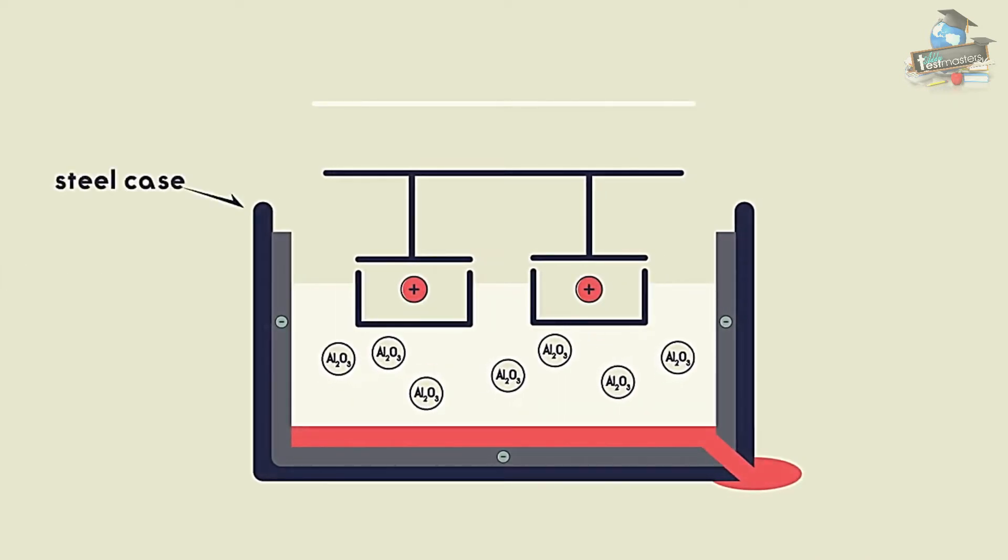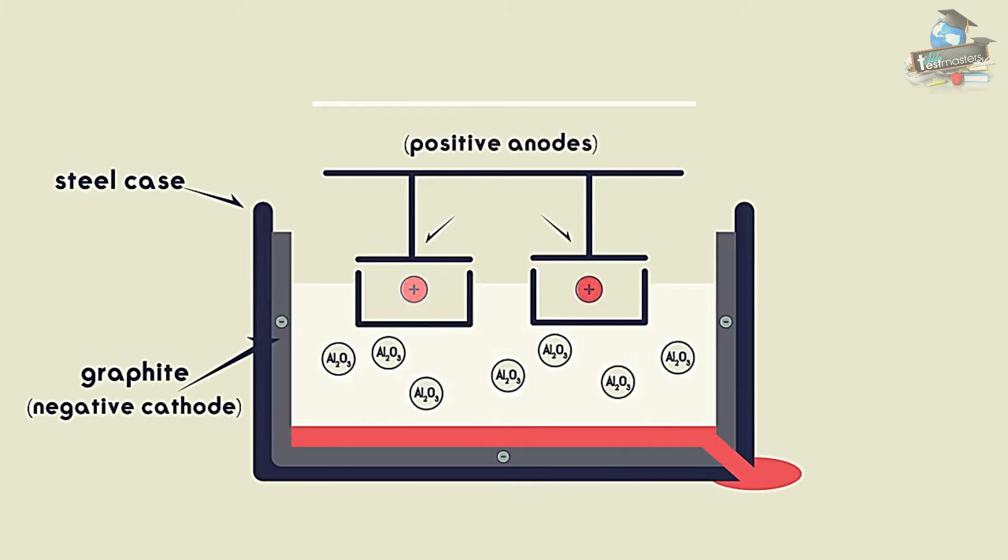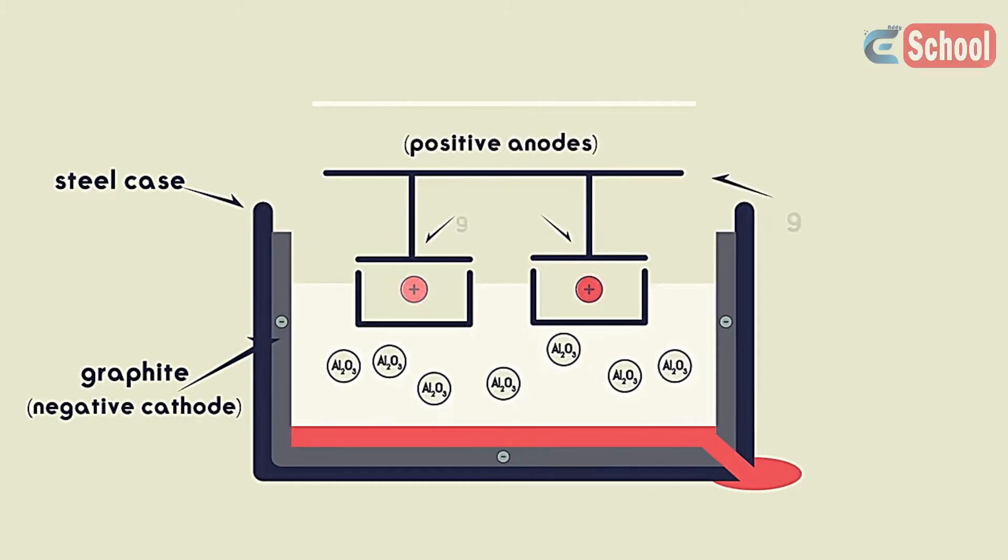The steel case is coated with graphite, providing the negative cathode. The positive anodes are immersed in the molten cryolite and are also made of graphite. Remember that graphite is a form of carbon.